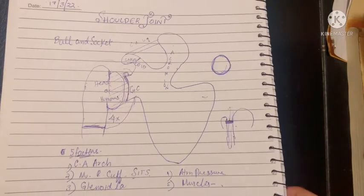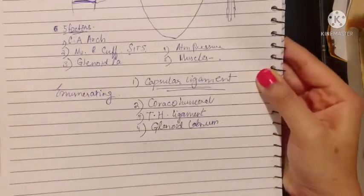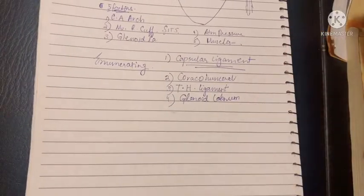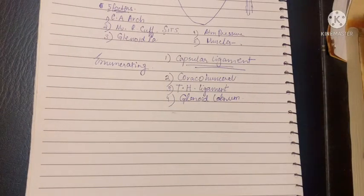Assalamu alaikum, this is Dr. Hasna and today we will be talking about the blood nerve supply of the humerus along with the movements of the shoulder joint and finally the scapulohumeral rhythm.